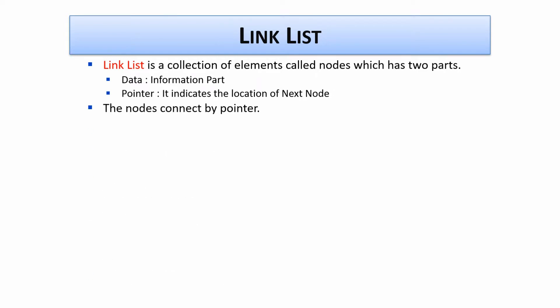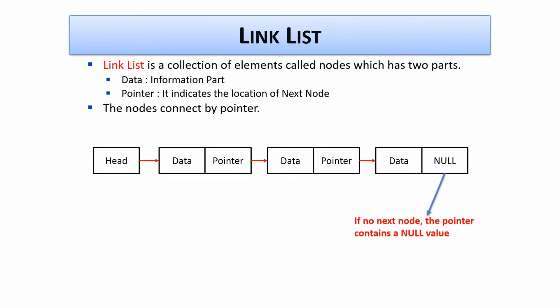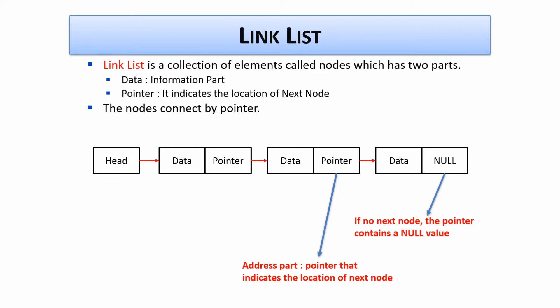The nodes are connected by the pointer. Each and every node has two things: one is the data, another one is the pointer. But if it is the last node, then it contains null as the next pointer. The first node is known as the head. If no next node is available, the pointer contains the null value. A pointer is an address part — it indicates the location of the next node.